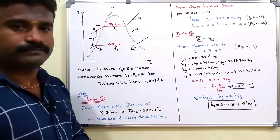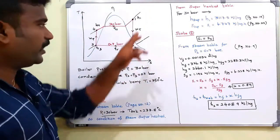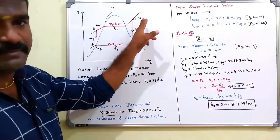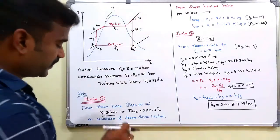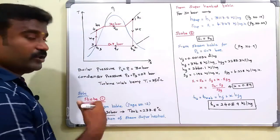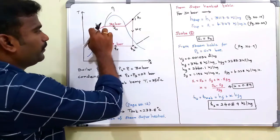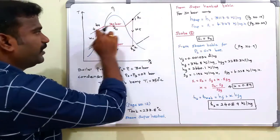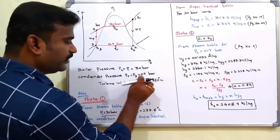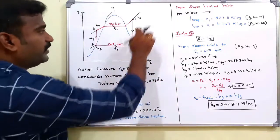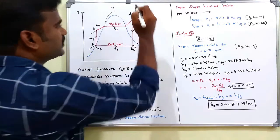We will solve it. I said this is superheated steam. We define the state. What is the pressure at the turbine inlet? The pressure is P1. The boiler pressure is P1 and P4 - this is the same pressure. So P1 and P4 is 30 bar. P2 and P3 is 0.7 bar. T1 temperature is 350 degrees Celsius.